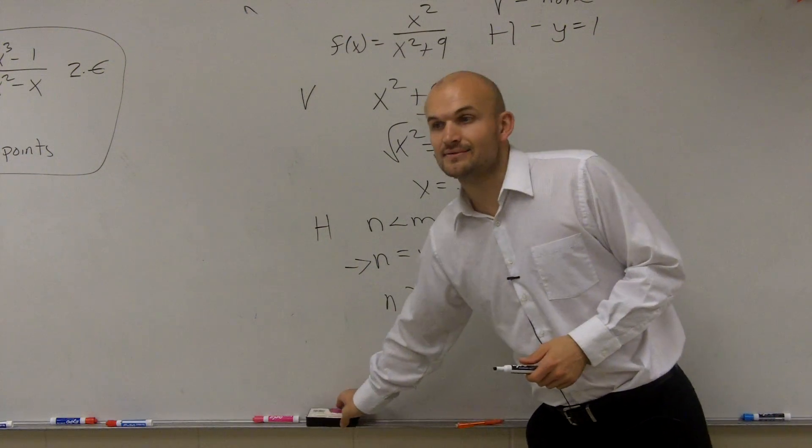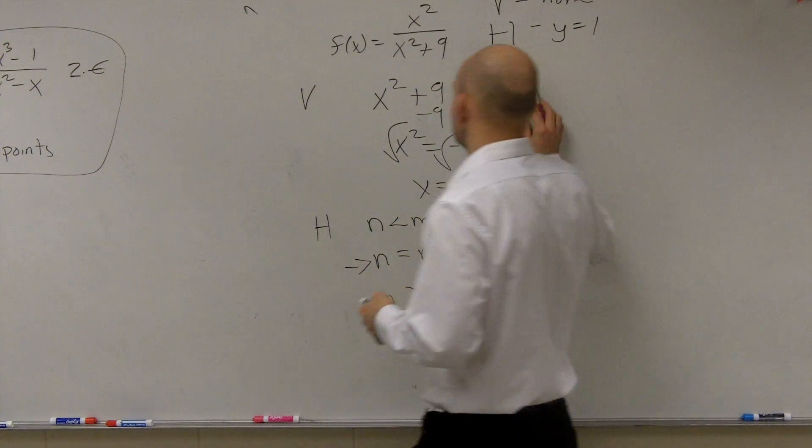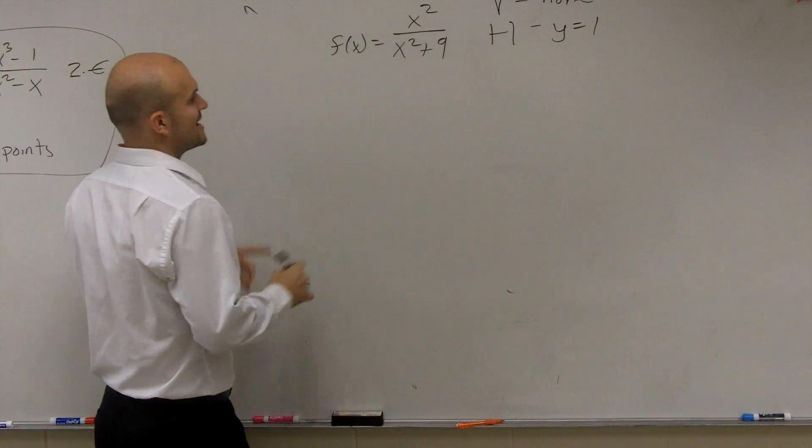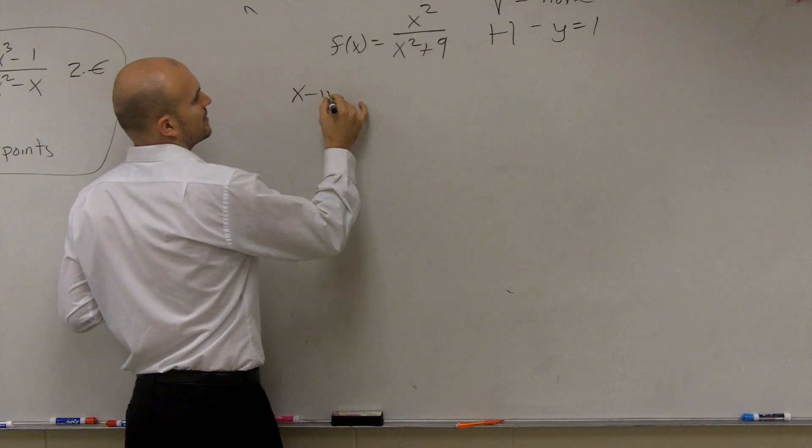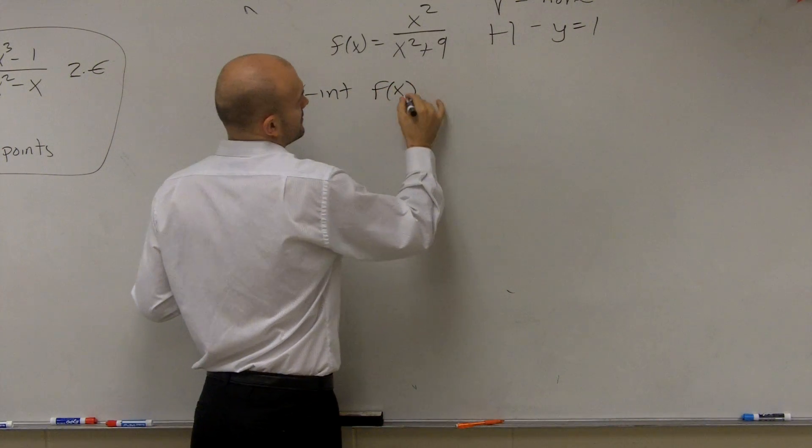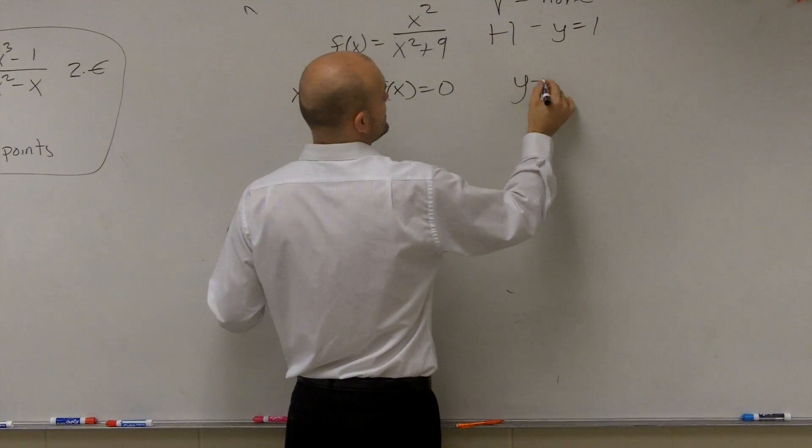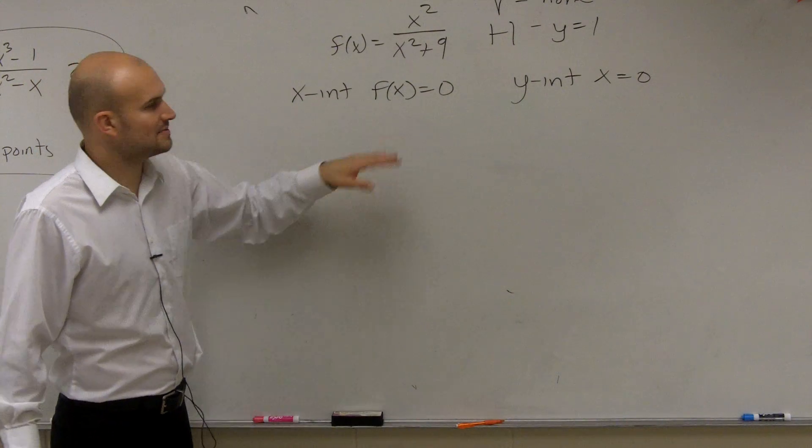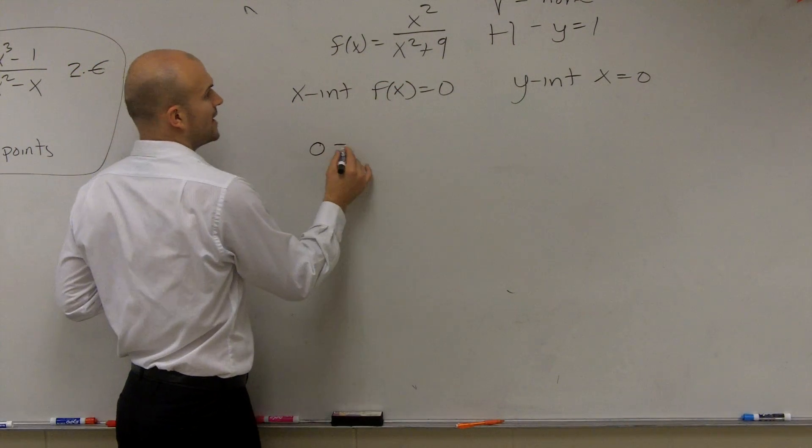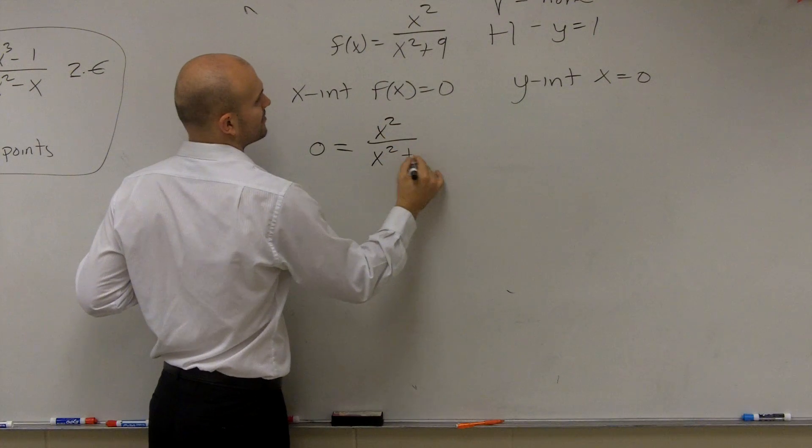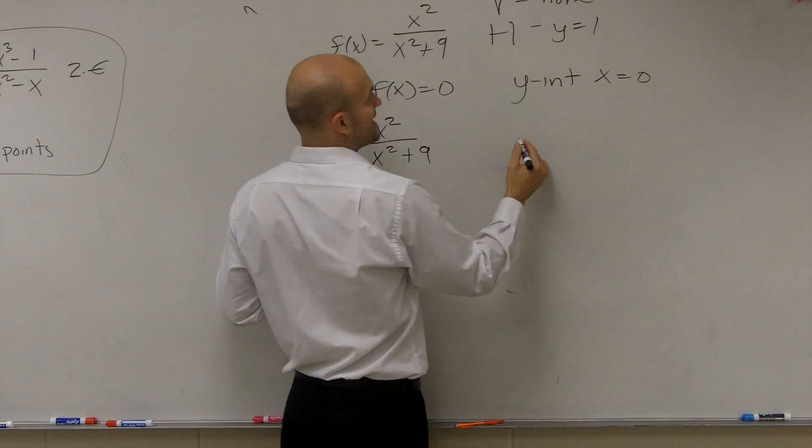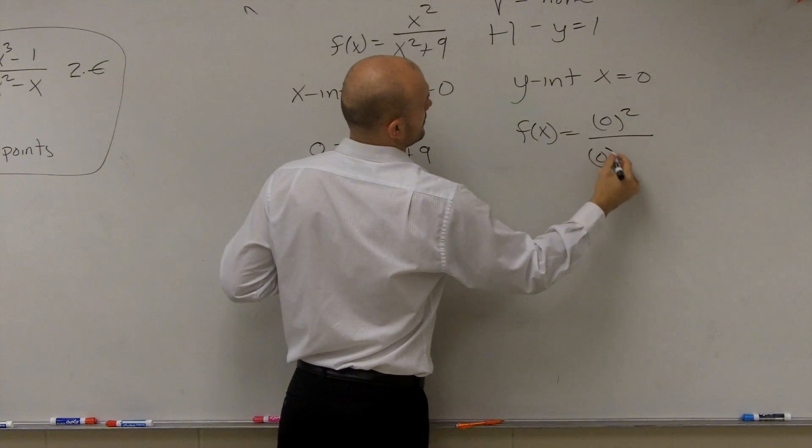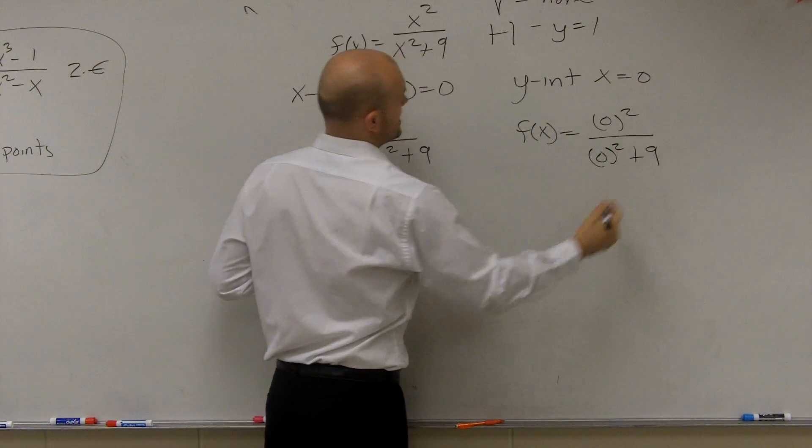Now I'm going to erase this, because the next thing we need to do is the next thing I ask you to find the x and y intercepts. So there's two other terms for this, x and y intercepts. To find the x-intercept is when y or your f of x equals 0. And your y intercept is when x equals 0. So x-intercept is when your output value equals 0. So we just put a 0 in for that, and we get x squared over x squared plus 9. In contrary, the y-intercept is when x equals 0, so it looks like this. f of x equals 0 squared over 0 squared plus 9. All right?